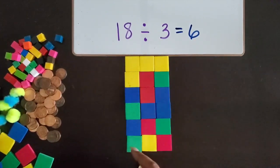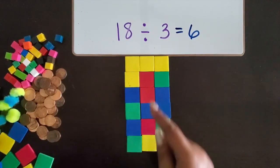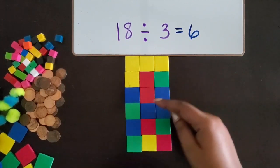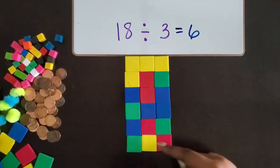So that means there are six square units as the length because we know 3, 6, 9, 12, 15, 18.